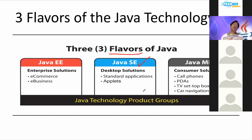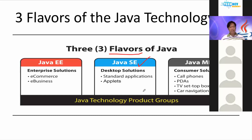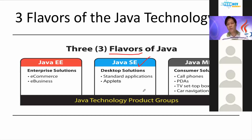Larry Page and Sergey Brin — these were PhD students at Stanford University. They were taking up a PhD course when they created Google.